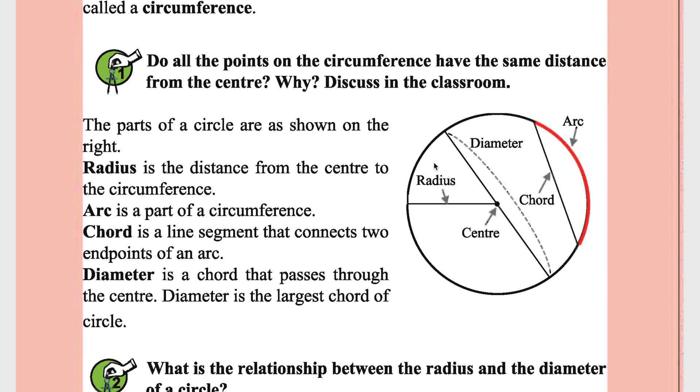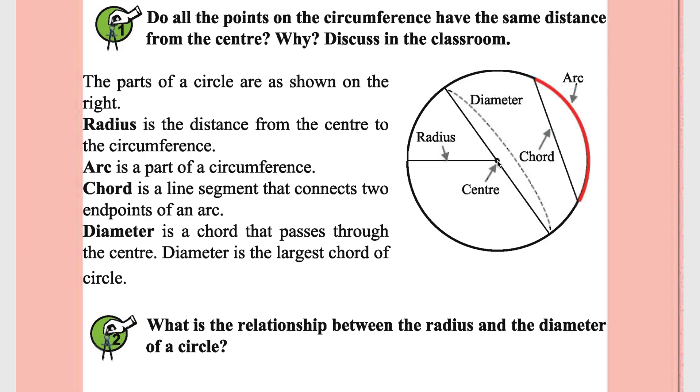Let's see the parts of the circle. This is the center, the center point of the circle, and the distance from the center to the circumference is called radius.